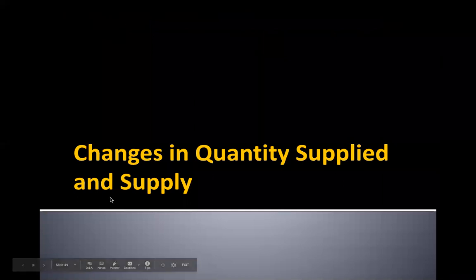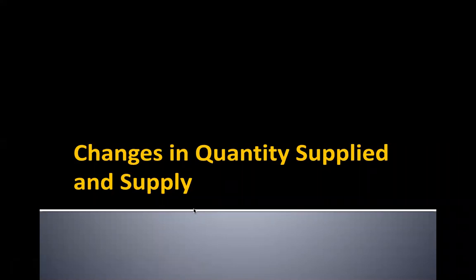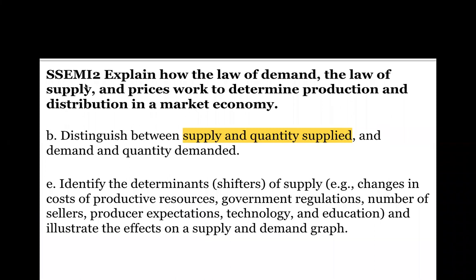Now we're going to look at changes in quantity supplied and changes in supply. These work at their core very much like the demand-side changes — we're just dealing with the supply curve and thinking from the business owner's perspective instead of the consumer's. We're now looking at how much product is being put on the shelf, and what kinds of things change that amount.